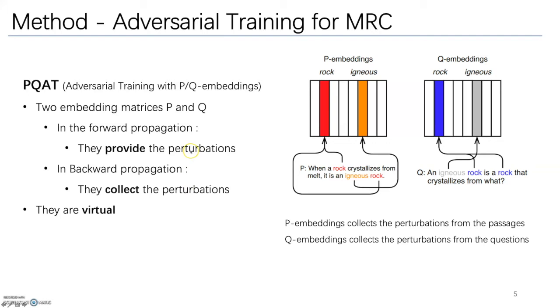Specifically, in the forward propagation, each passage word obtains its perturbation by looking up the P embeddings, and each question word obtains its perturbation by looking up the Q embeddings.